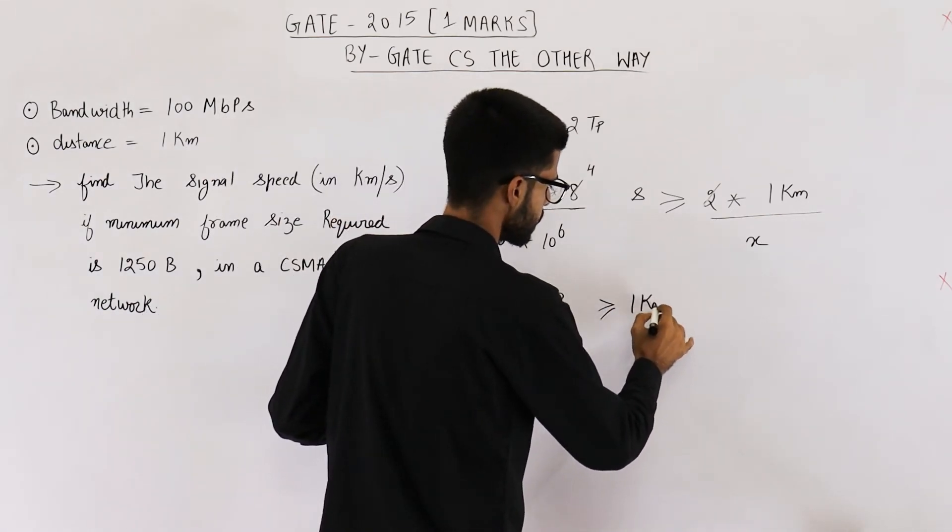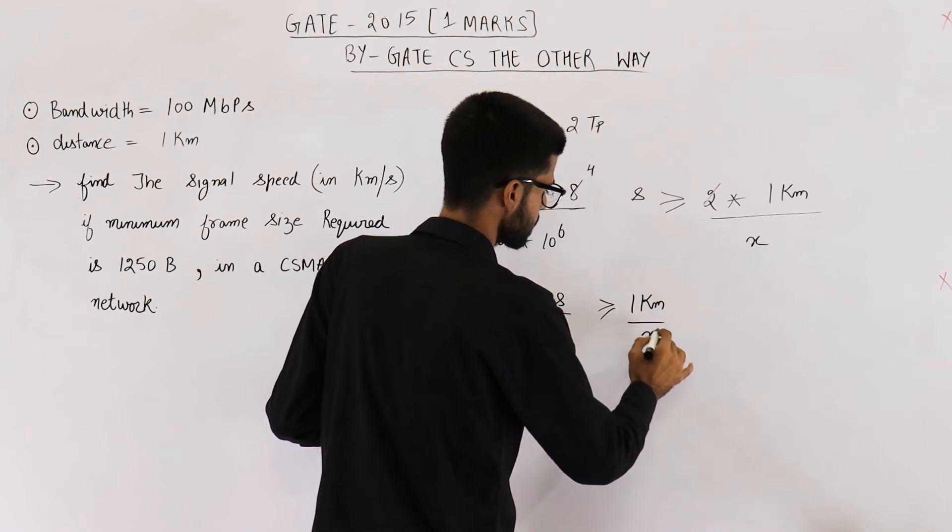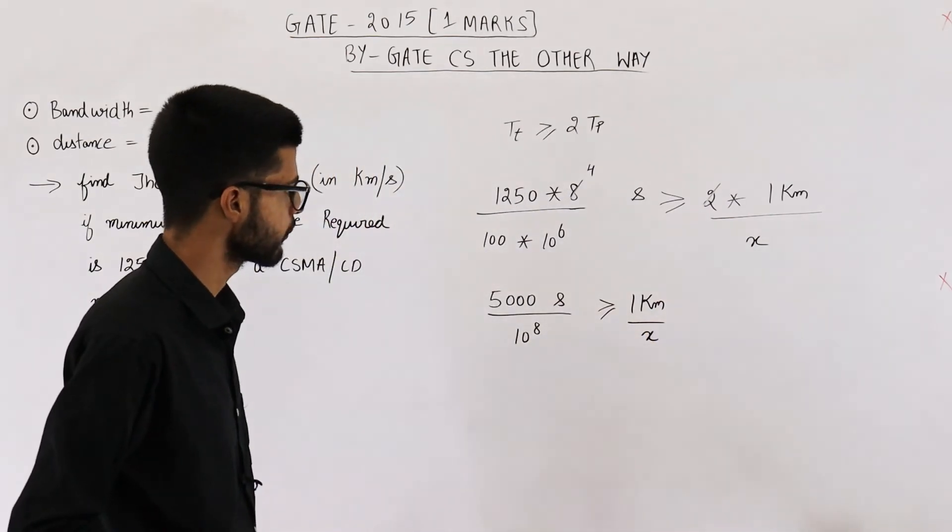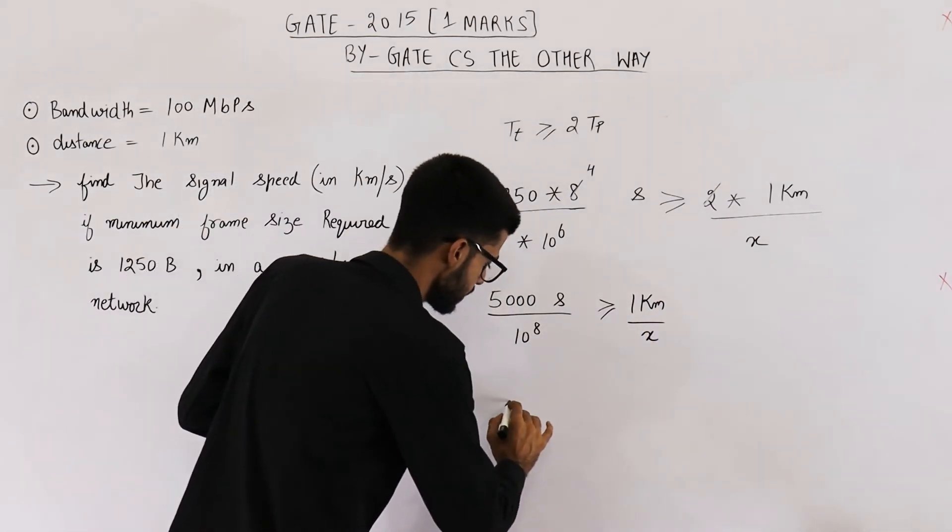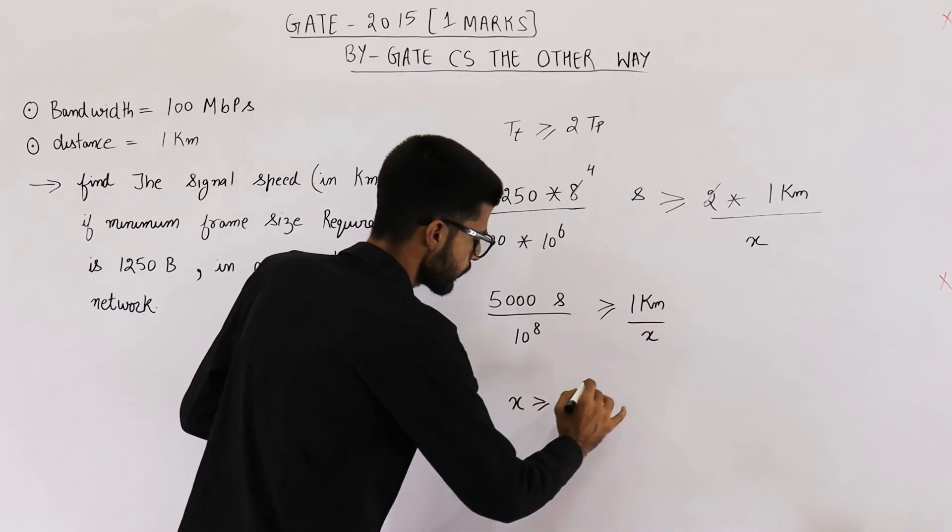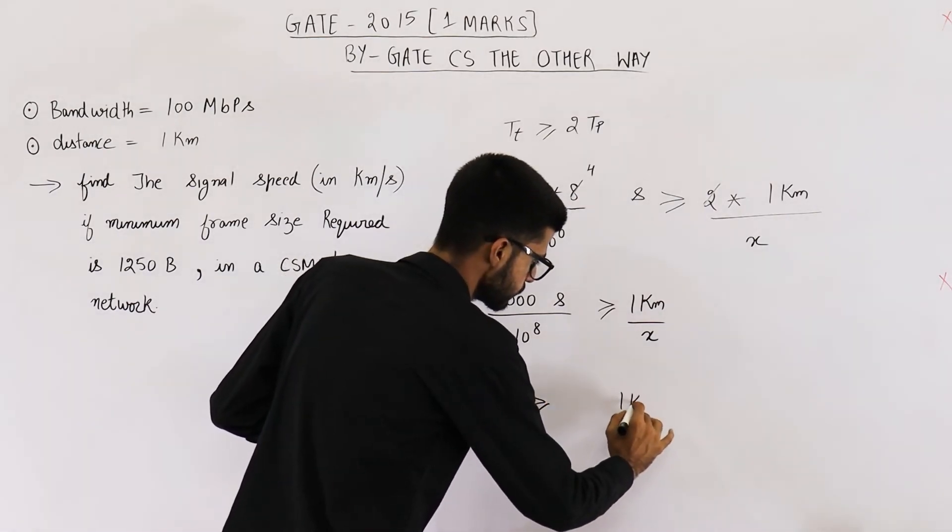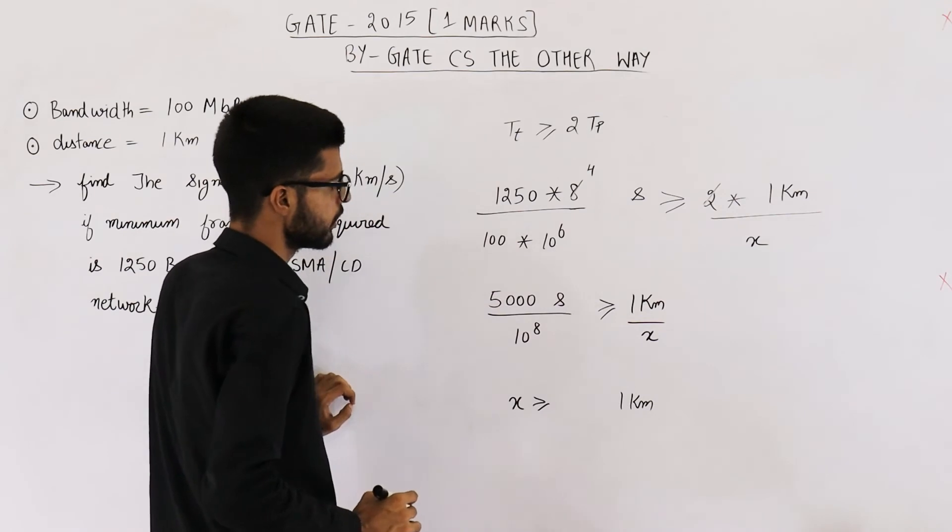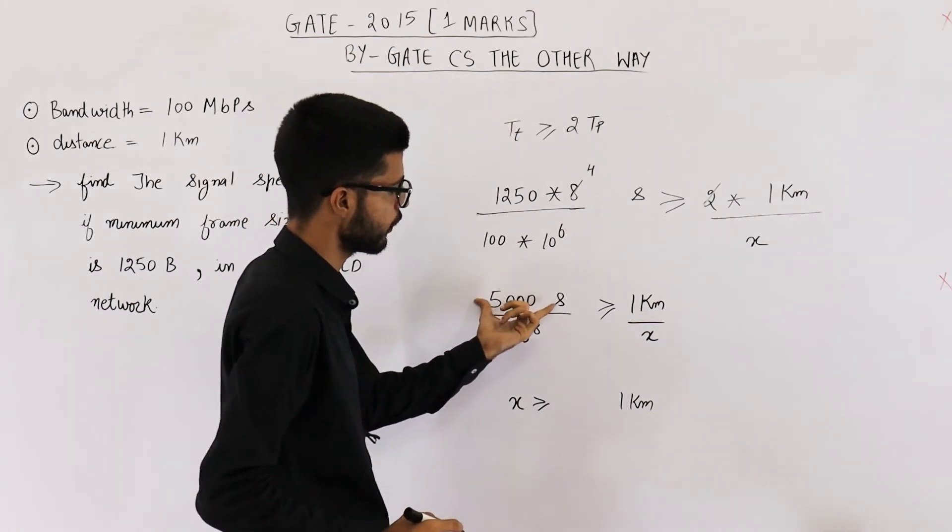1 kilometer by X. So, from here you can see X will be greater than or equal to 1 kilometer divided by 5000 seconds.